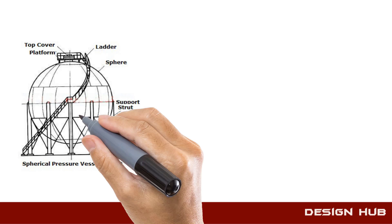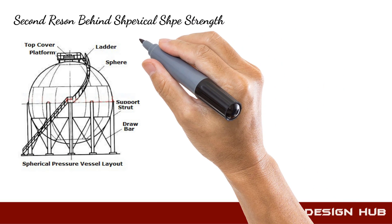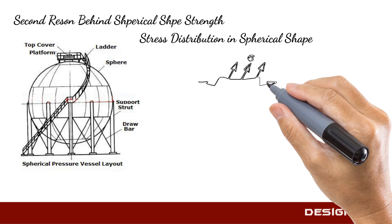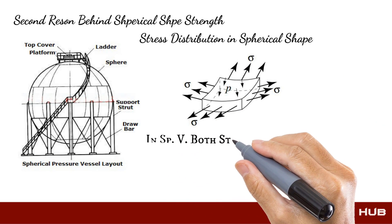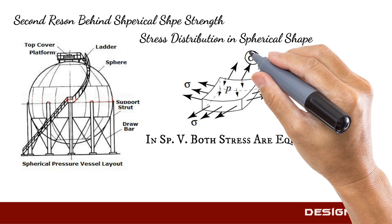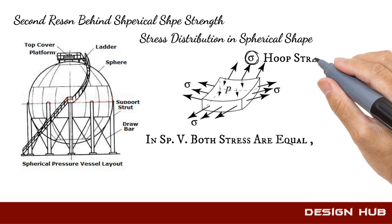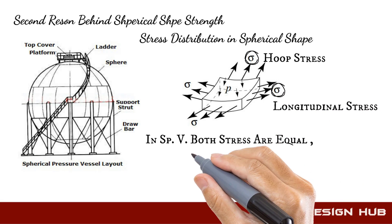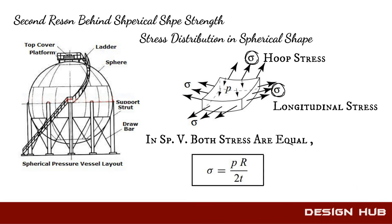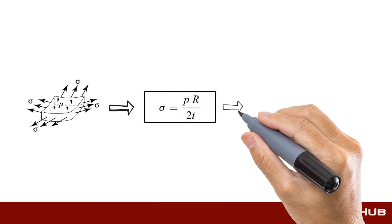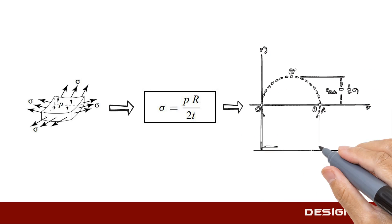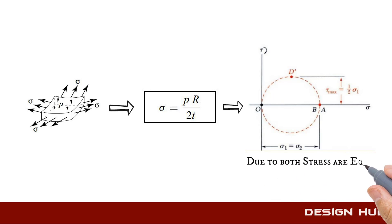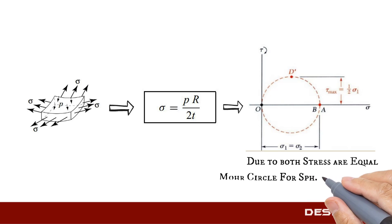Now we discuss about stress distribution. Due to the even distribution of pressure, stresses generated in the vessel wall are equal in both directions. This is hoop stress; this is circumferential stress; this is longitudinal stress. In a spherical vessel, both are equal, where sigma equals pressure multiplied by radius of the pressure vessel divided by 2 times the thickness of the vessel. Due to equal stress in both directions, the Mohr's circle for a spherical pressure vessel is a point, and this point value is this one.